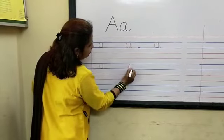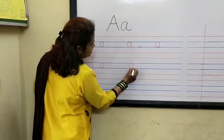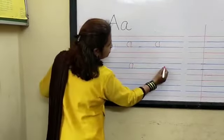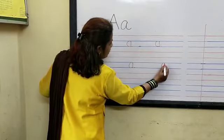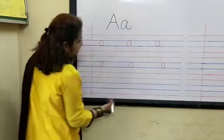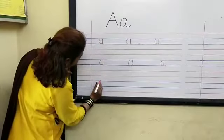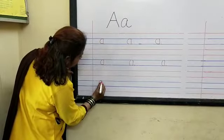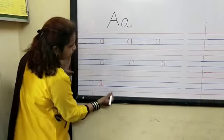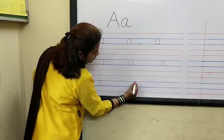A. Curve, standing line and a small curve. A. Curve, standing line and a small curve. A.